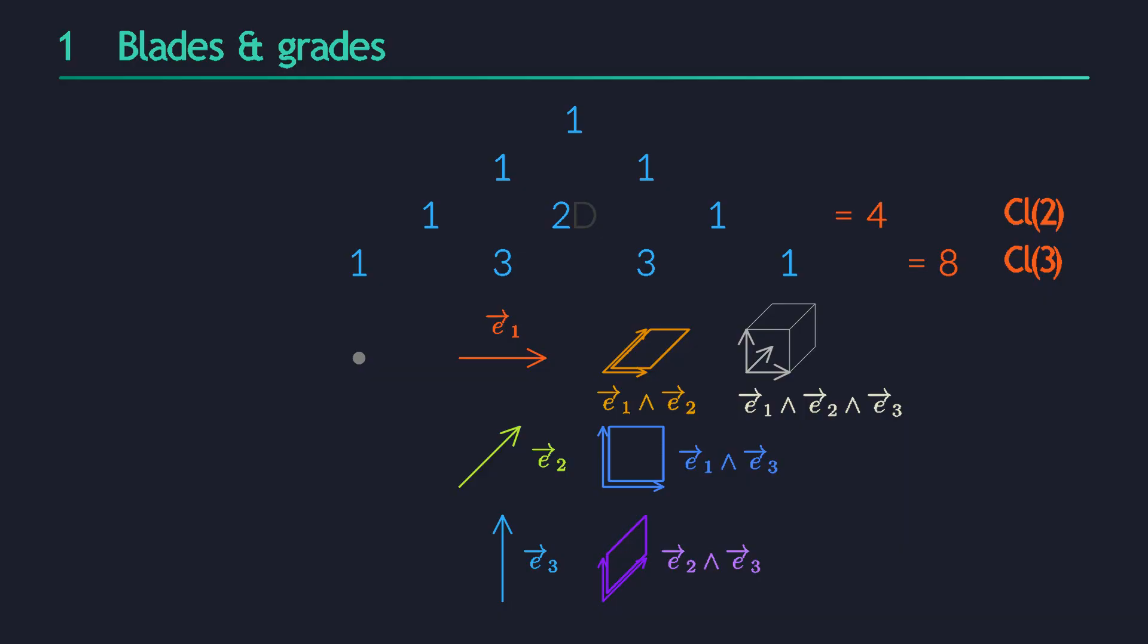You may be aware that the numbers in a given row of the Pascal triangle always add up to a power of 2. So, in general, when we start from an n-dimensional vector space, we will get a 2 to the n-dimensional Clifford algebra, containing basis blades of grades 0, 1, 2, and so on, up to and including n itself.